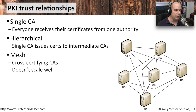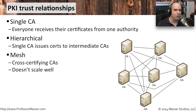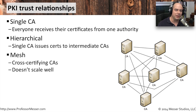There's also a type of trust called the mesh trust relationship, where every certificate authority trusts all of the other certificate authorities. That works extremely well if you have two, three, or four CAs. But as you start adding more and more, every single one of those certificate authorities has to trust everyone else, and it becomes a little bit more difficult. At a certain point you simply can't scale any larger — it's just too complicated and too difficult to manage.